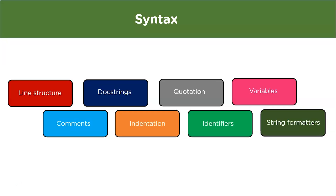Next is indentation. In Python, indentation means the spaces at the beginning of a code line. If there are no spaces where required, it will show a syntax error. We can indent using spaces or tabs. Quotations are used to create string objects in Python — if we use a single quote at the beginning of a string, we must end it with a single quote, and the same goes for double quotes.